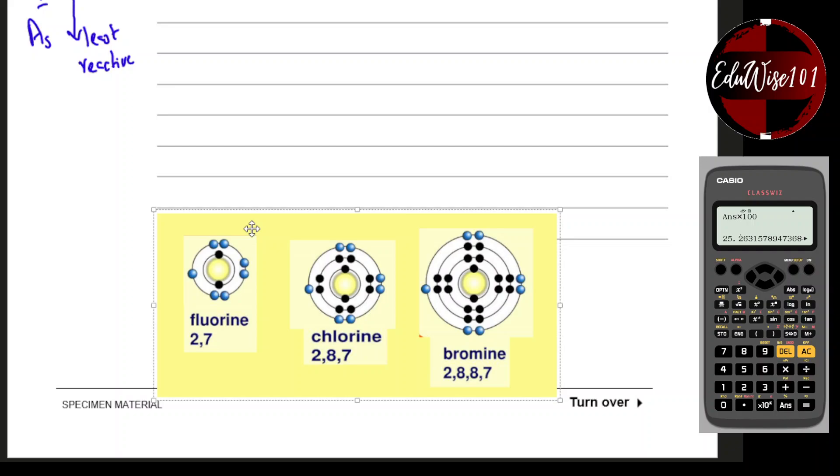Here I have fluorine, chlorine, and bromine, the first three elements in group 7. Fluorine has two shells - the first shell is full, the second shell has 7 electrons, so it needs one more electron to make that shell full. Chlorine has three shells and also needs one more electron to make the third shell full. Bromine has four shells and 7 electrons in the outer shell, and also needs one more electron.